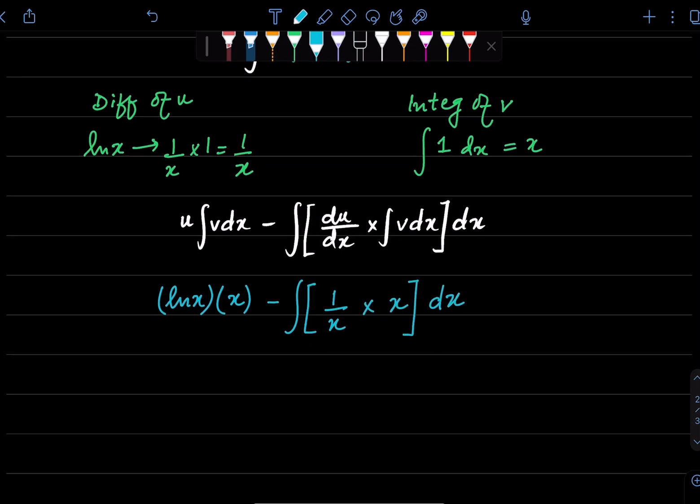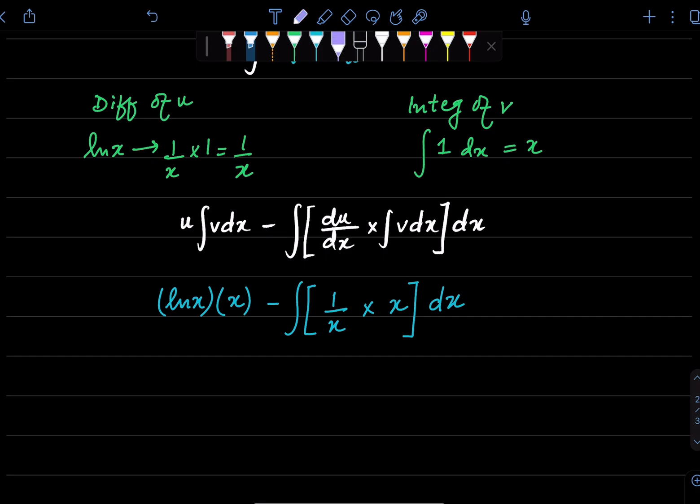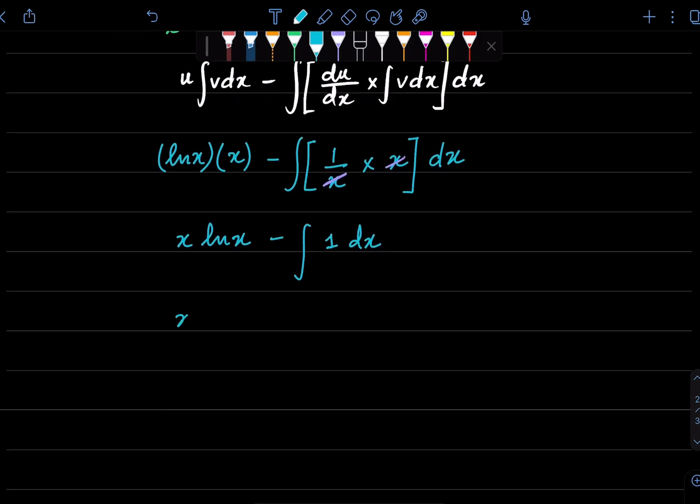As you can see, the terms will simplify inside the bracket. It will become x ln x minus integral of 1 dx and that would simplify to x ln x minus x.